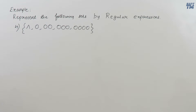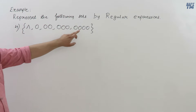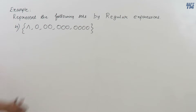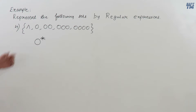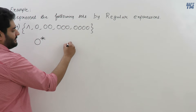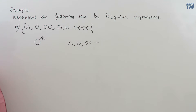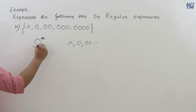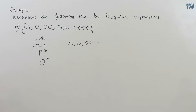Now consider a set containing the null string, 0, 00, 000, 0000, and so on. This is nothing but 0-closure (0*). The 0-closure includes the null string when no 0 is present, then one 0, two 0s, three 0s, up to infinity. So the required regular expression is 0*.